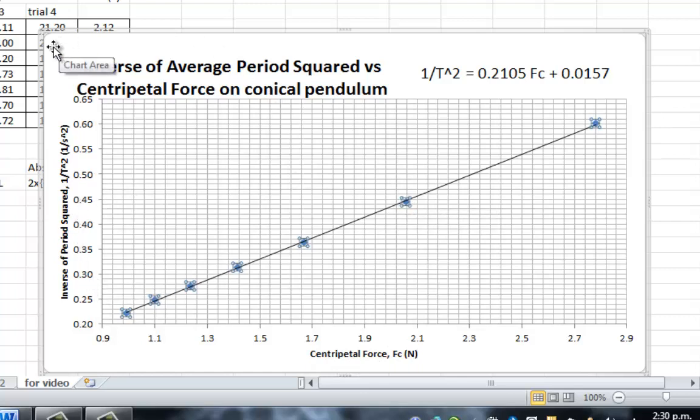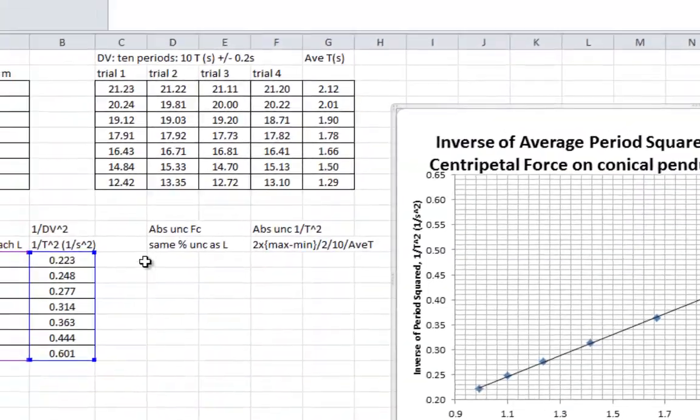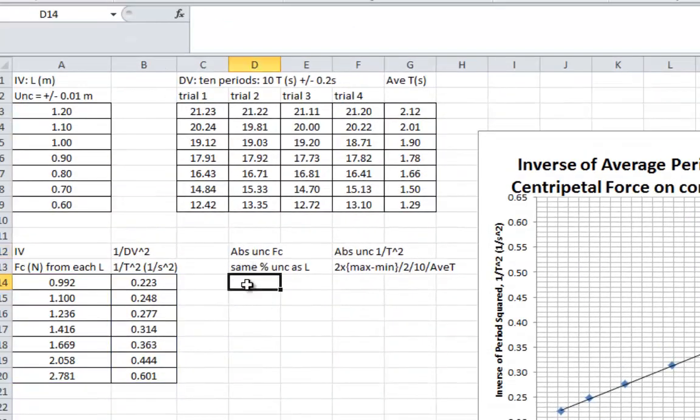To do that, we need uncertainties. So here we go. The uncertainty for each centripetal force comes from each L. Each L had an uncertainty of 0.01. So what we do is we use that 0.01. We say equals 0.01,